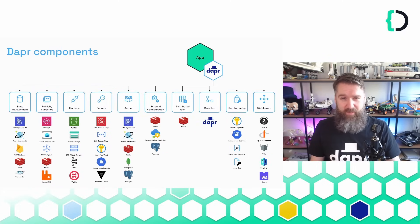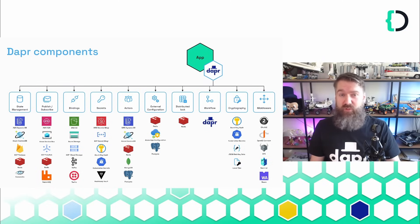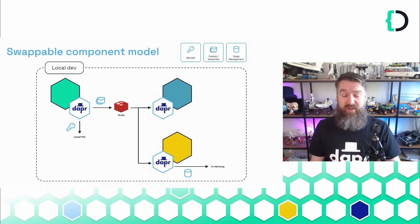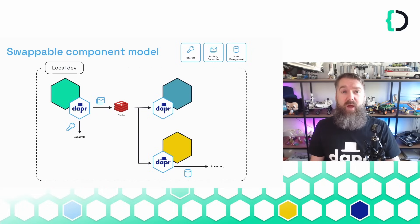The best thing about these APIs is that the underlying infrastructure is abstracted away. So you only need to learn the Dapr API, and with that, you can use any message broker, Key-Value Store, Secret Store, etc., without using their specific client SDKs. You can have a fast inner development loop where you use local components, such as an in-memory state store, and when you push your code to another environment, you can use cloud-based infrastructure by changing a YAML file.